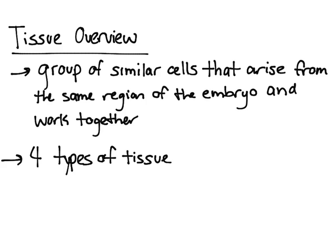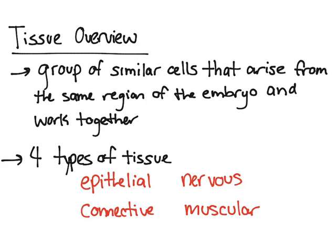There are four different tissue types that we're going to be concerned with. These are broad categories that will be broken down even further. The four types of tissue are epithelial tissue, connective tissue, nervous tissue, and muscular tissue.